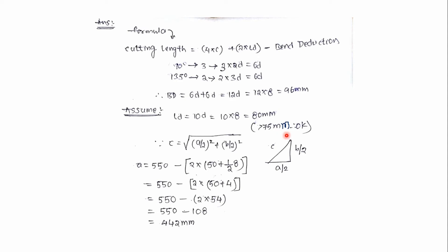Since c is the inclined length, we can find out the length of the stirrup by Pythagoras theorem: c equals to square root of (a/2)² plus (b/2)².